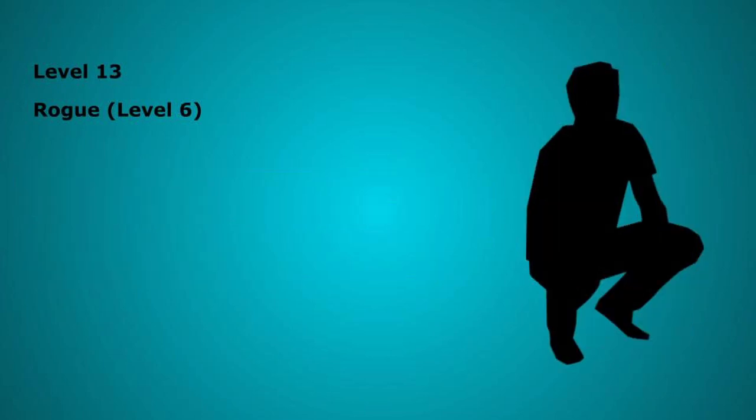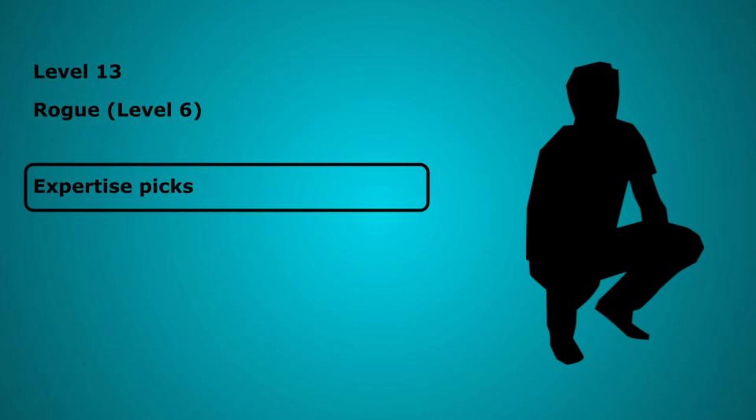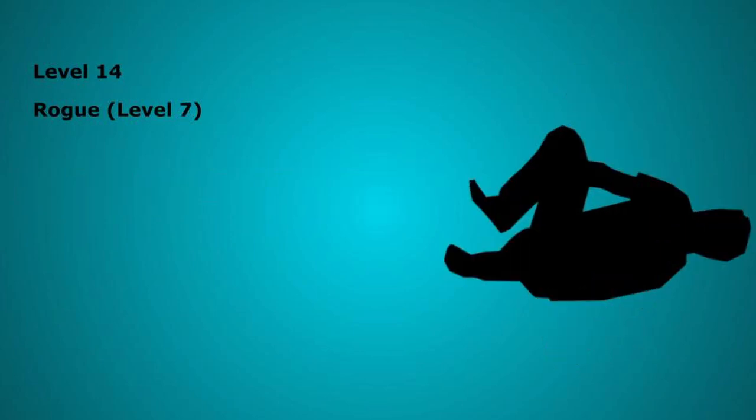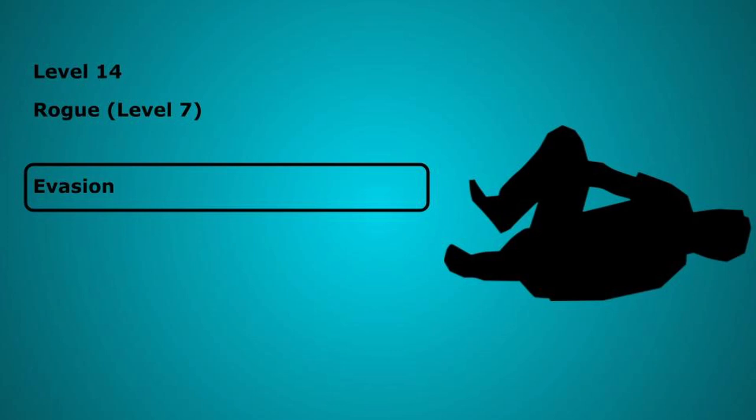Level 13 we take our 6th level in Rogue where you get another 2 expertise options. Use this choice to round out your party. Level 14 we take our 7th level in Rogue where you get the evasion feature. When you are subjected to an effect that allows you to make a dexterity saving throw to only take half damage, you instead take no damage if you pass and half damage if you fail. 7th level Rogues also increase our sneak attack damage to 4d6.